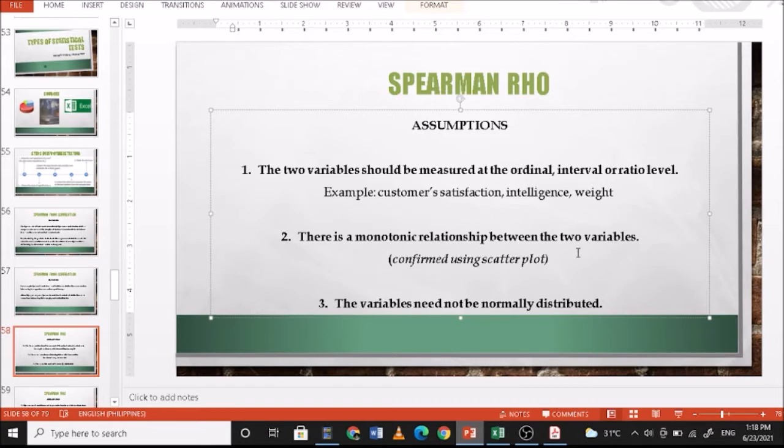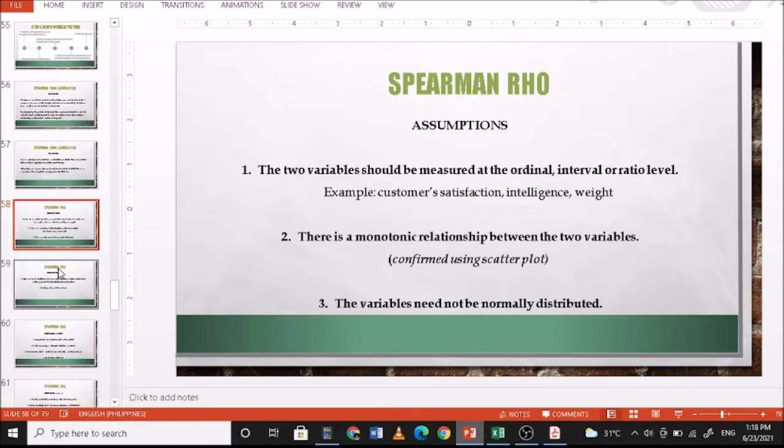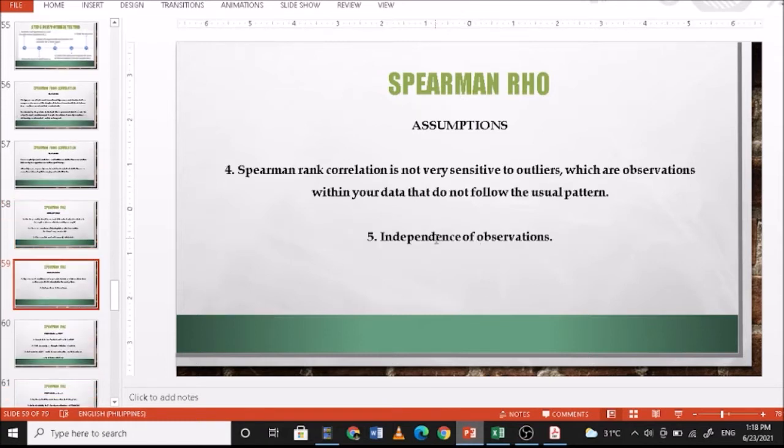There is a monotonic relationship between the two variables. You can confirm this one using a scatterplot. The variables need not be normally distributed, so there is no assumption of normality. Spearman Rank correlation is not very sensitive to outliers, so even if there is a linear relationship with outliers, you can still use this one. Outliers are observations within your data that do not follow the usual pattern. And of course, there is independence of observation—you cannot observe the same respondent for two results.